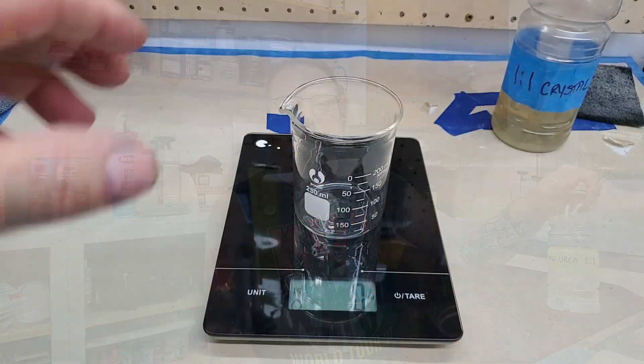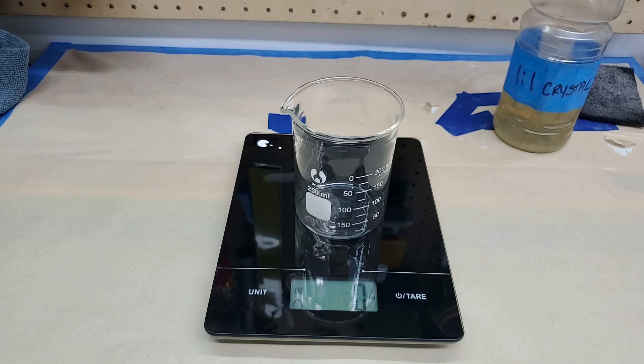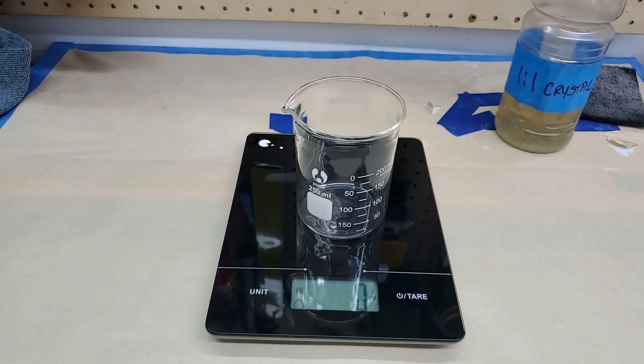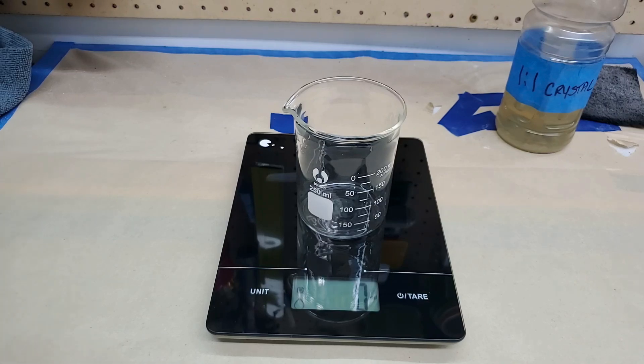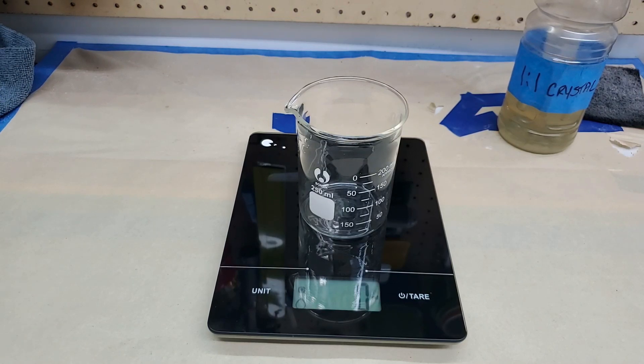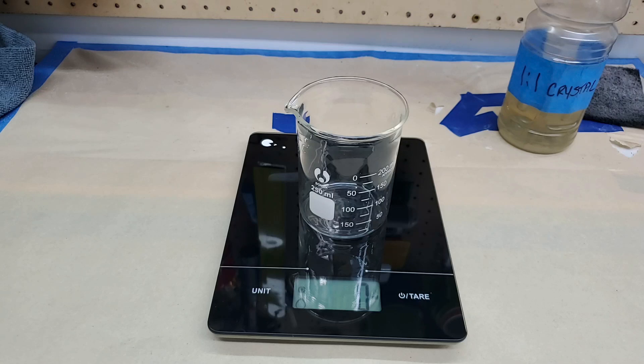And I'll show you how to mix that up. First thing we want to do is tare out the container on the scale. And then I've got, this is just purified water from Dollar General, you can get it anywhere.